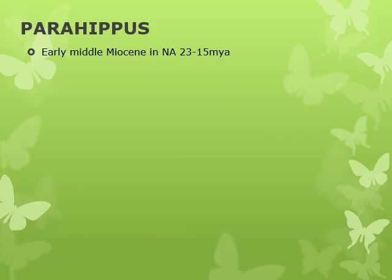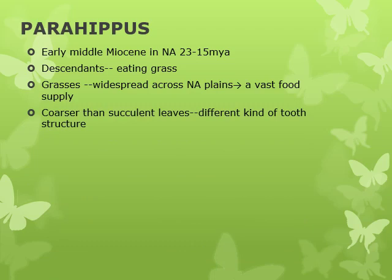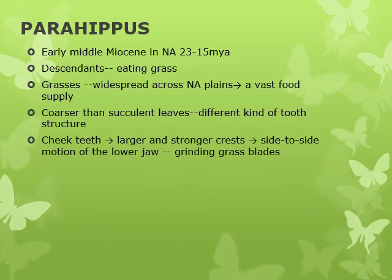Parahippus evolved in the early-middle Miocene in North America, about 23 to 15 million years ago. It is one of the grass eaters which evolved from Miohippus, and it and its descendants adapted for grass eating. Grasses at that time were becoming widespread across the North American plains, providing Parahippus with a vast food supply. As grass is a much coarser food than succulent leaves and requires a different kind of tooth structure, the cheek teeth had to develop large and stronger crests and adapt to the side-to-side motion of the lower jaw, which is necessary for grinding grass blades.